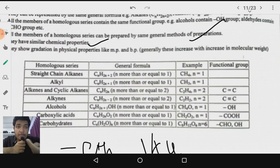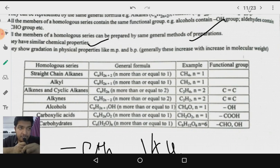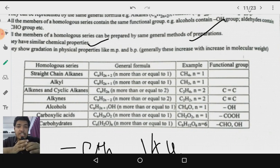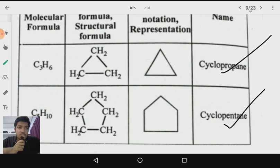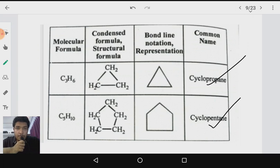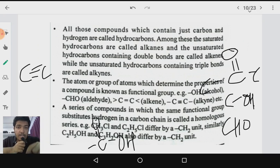The general formulas for different homologous series are: alkanes — CₙH₂ₙ₊₂; alkenes — CₙH₂ₙ; alkynes — CₙH₂ₙ₋₂; alcohols — CₙH₂ₙ₊₁OH; carboxylic acids — CₙH₂ₙO₂; and carbohydrates — Cₙ(H₂O)ₙ. The remaining topics of this chapter — nomenclature, reactions, and compounds of carbon — have been deleted from the curriculum. So this brings us to the end of the chapter Carbon and its Compounds. In the upcoming lecture we will discuss the periodic classification of elements, the last chapter of chemistry. Thanks for watching!